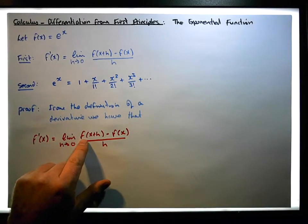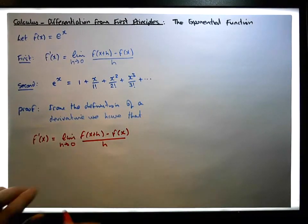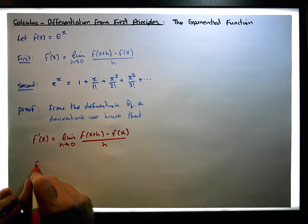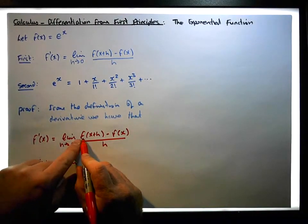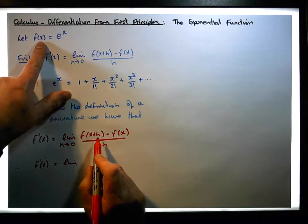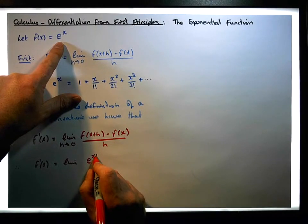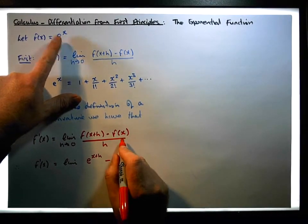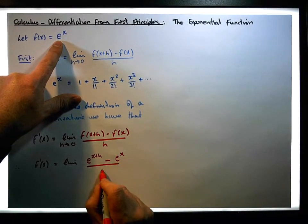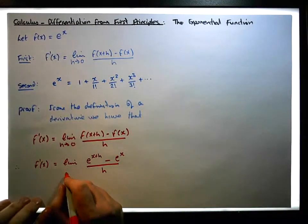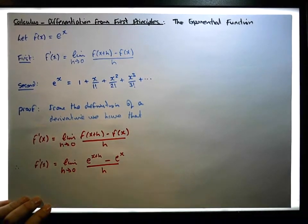So what we need to do is evaluate the function f of x at x plus h. Therefore we have that f prime of x must be equal to the limit of — well, f of x plus h is simply equal to e to the power of x plus h, minus f of x, while f of x is simply equal to e to the x — which all needs to be divided by h, as h tends to zero.